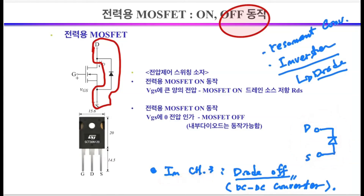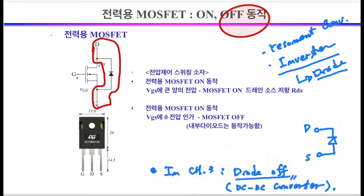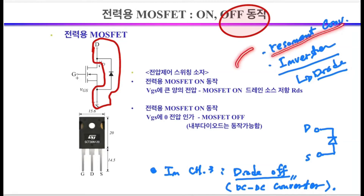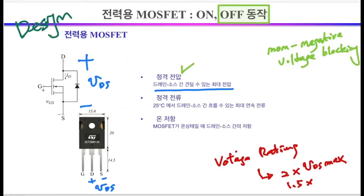In the DC-DC converter circuit covered in chapter three, this internal diode will always be turned off. If you use an inverter as covered in chapter five, you will be able to make this diode work. Also, when applied to a converter that operates at high frequencies, such as a resonant converter, this internal diode of the MOSFET can operate on and off. Therefore, you should consider the internal diode as well as the MOSFET itself.